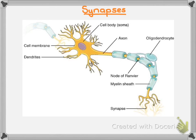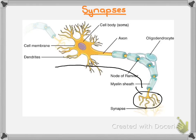Our neurons do not touch one another, which means that where there is the terminal branch it connects with the dendrites of the next neuron and they don't actually touch one another. That means that when an impulse is running down a neuron, like this motor neuron in front of you, it goes down from the dendrites through the axon and to the terminal branches where it then gets to the synapse.